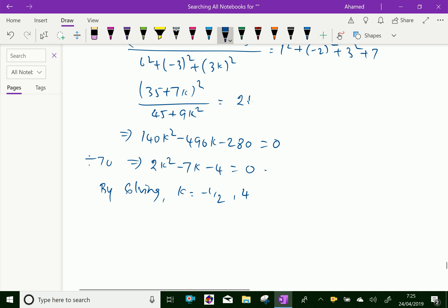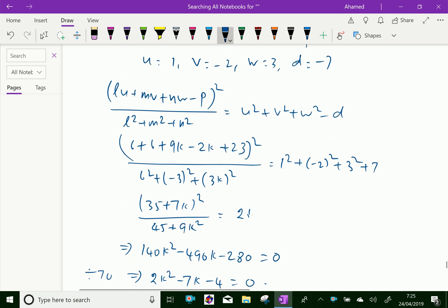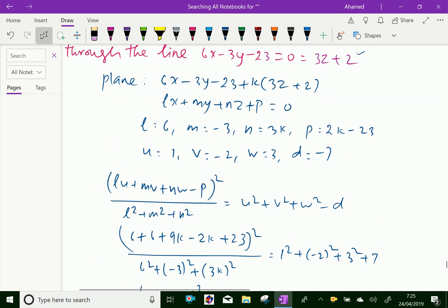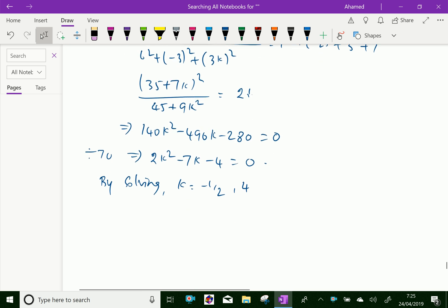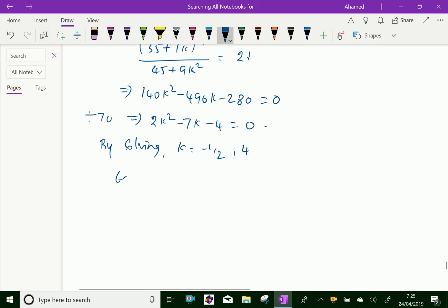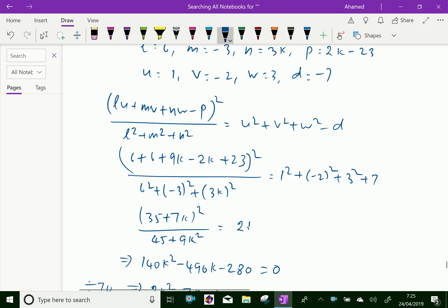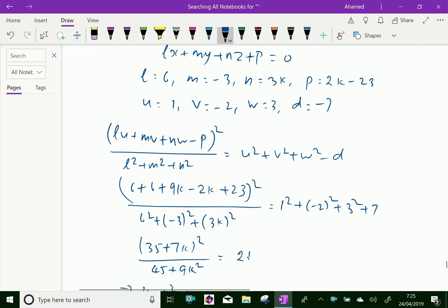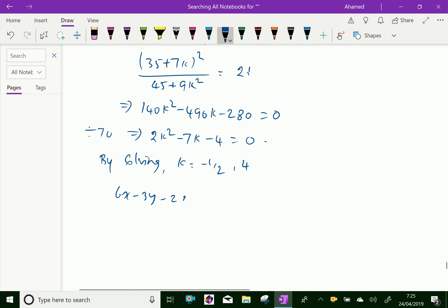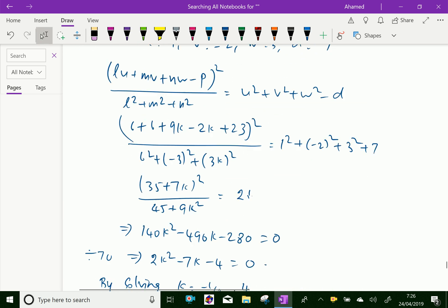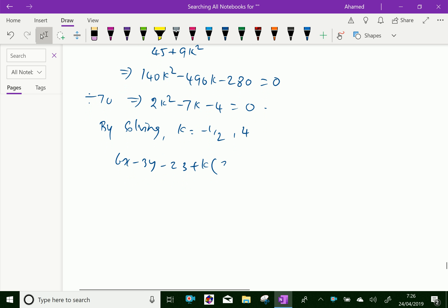Now, let us apply this k value in the equation 6x - 3y - 23 + k(3z + 2). Let us apply the value of k = -1/2 and 4. We will get 2 equations of the plane.